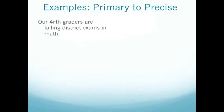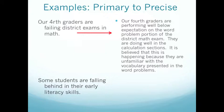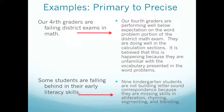A few more examples: our fourth graders are failing district exams in math. Getting more specific, we find out they're not doing as well on word problems because they're unfamiliar with the vocabulary embedded within those problems. Another primary statement: some students are falling behind in their early literacy skills — again, not much direction for solutions. But when we define it more specifically by saying nine kindergarten students are not building letter-sound correspondence because they're missing early literacy skills of alliteration, rhyming, segmenting, and blending, we start seeing the strategies we should be thinking about putting in place.